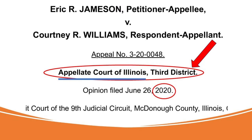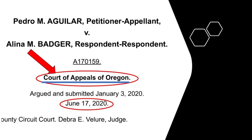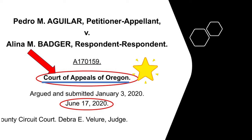How do you know which court made the ruling in a case? When you click on a case on Google Scholar, the top header of the case tells you which appellate division made the decision. For example, the Jameson versus Williams case in Illinois from 2020 was decided by the Appellate Court of Illinois, Third District. And the Aguilar versus Badger case in Oregon from 2020 was made by the Court of Appeals of Oregon.